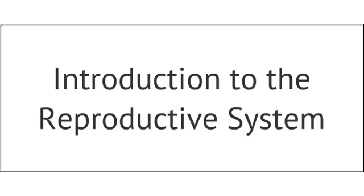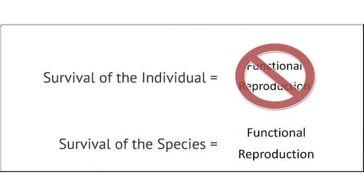Reproduction is one of the characteristics of life. Even though a functional reproductive system is not essential for the continued survival of the individual, it is required for the continued survival of the species.